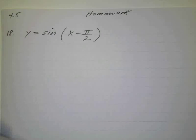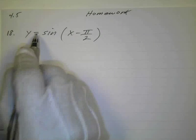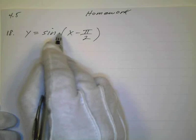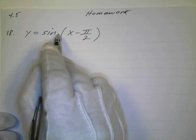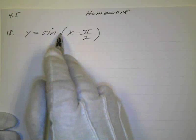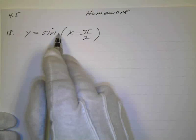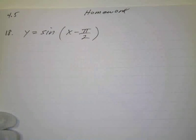If I look at this first one, number 18, I can tell right away my amplitude is going to be 1. I have nothing in front here, so my period is still going to be 2π because b is 1, so 2π over 1 is just 2π. So my period is 2π.